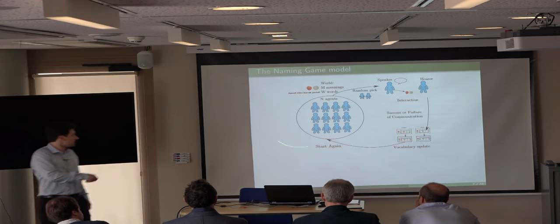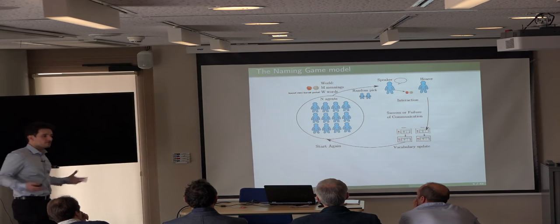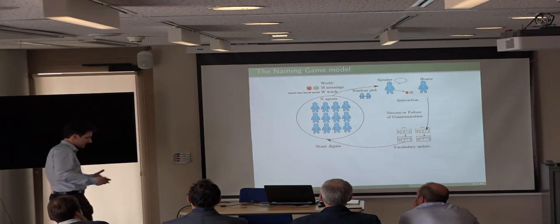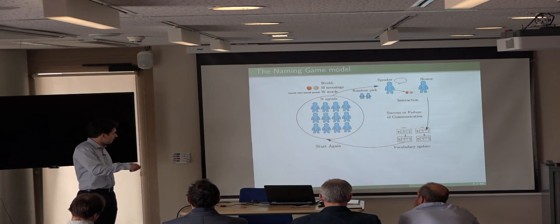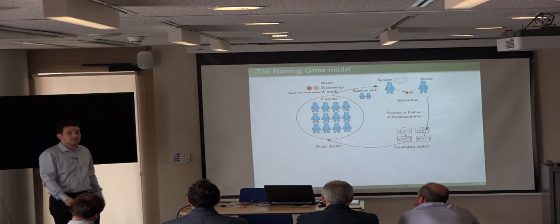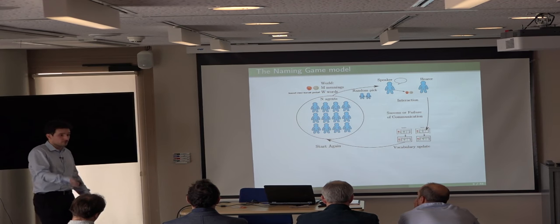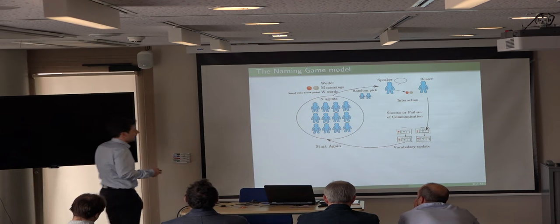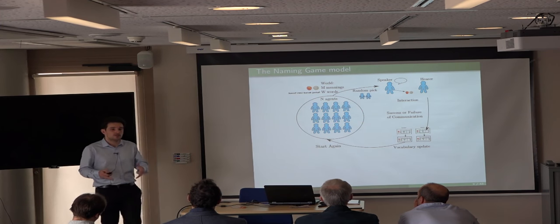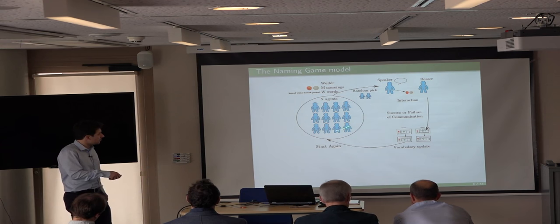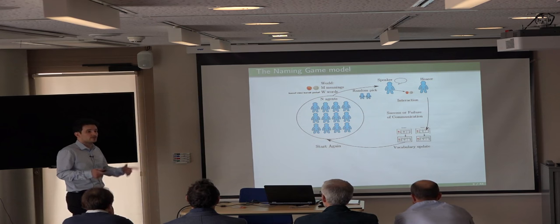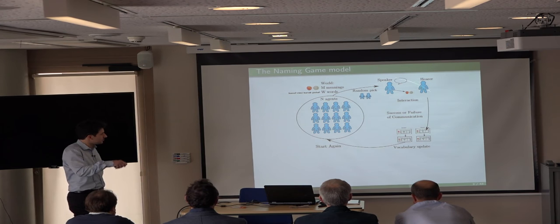You have a population of agents — imagine they don't know each other, they have no language and cannot talk to each other at the beginning, but they have to find a way to communicate. In their world, there are a certain number of objects or meanings they can refer to, and to refer to those meanings they can use a certain number of words. The problem is: how will they coordinate to reach a common mapping between the set of signals and the set of meanings? The model goes through a cycle of interactions where just two agents are picked each time.